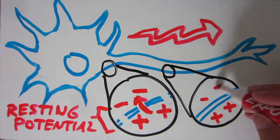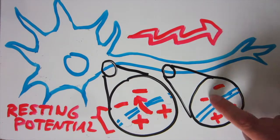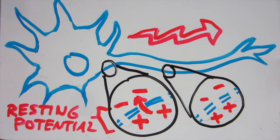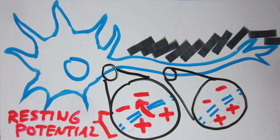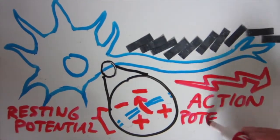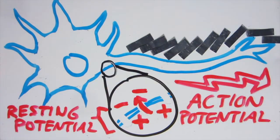As the electrical charge changes, other gates further along the axon are triggered to open. This process repeats all the way down like a line of dominoes, and we have our pulse of energy, called the action potential. This is how neurons communicate.